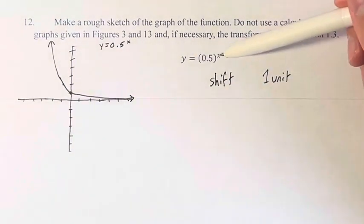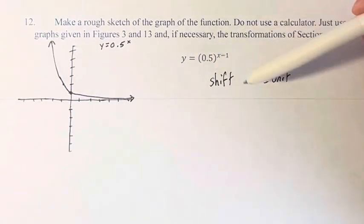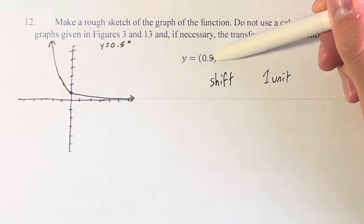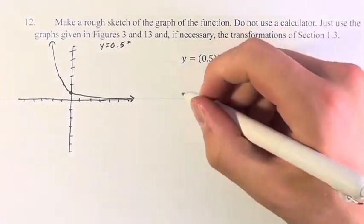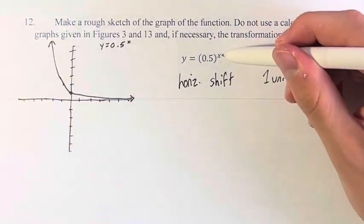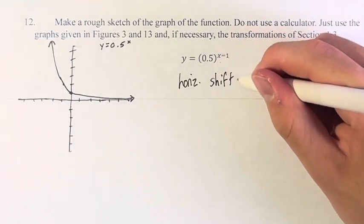And the subtraction is being done within the function. We're not calculating 0.5 to the x and then subtracting 1. It's 0.5 to the x minus 1, therefore it's horizontal. And minus 1, a negative number, means it's to the right.